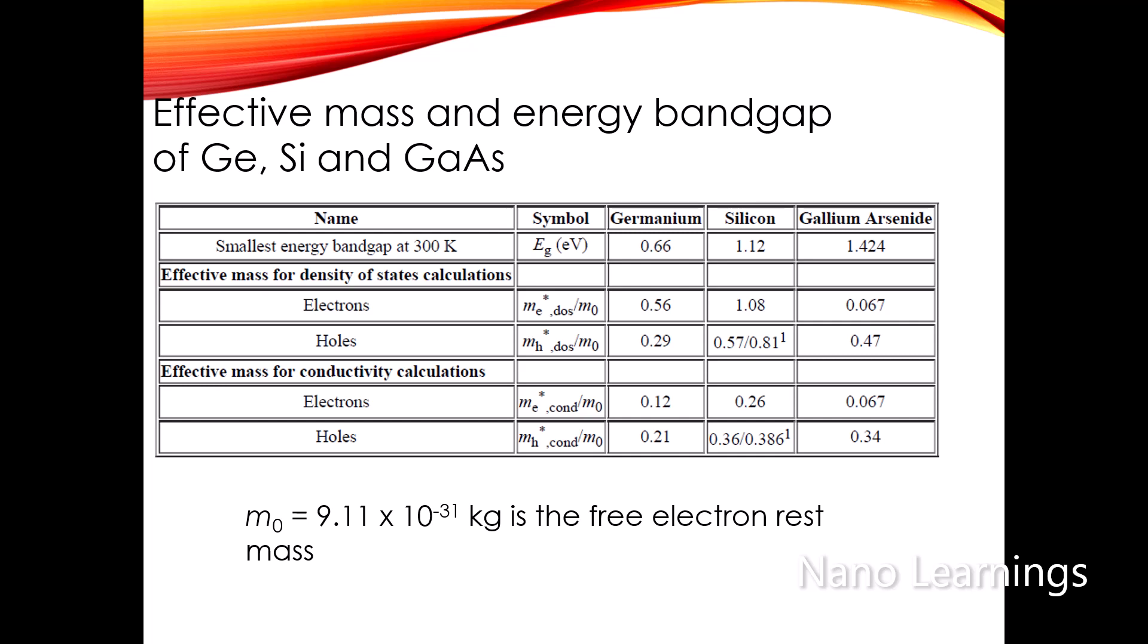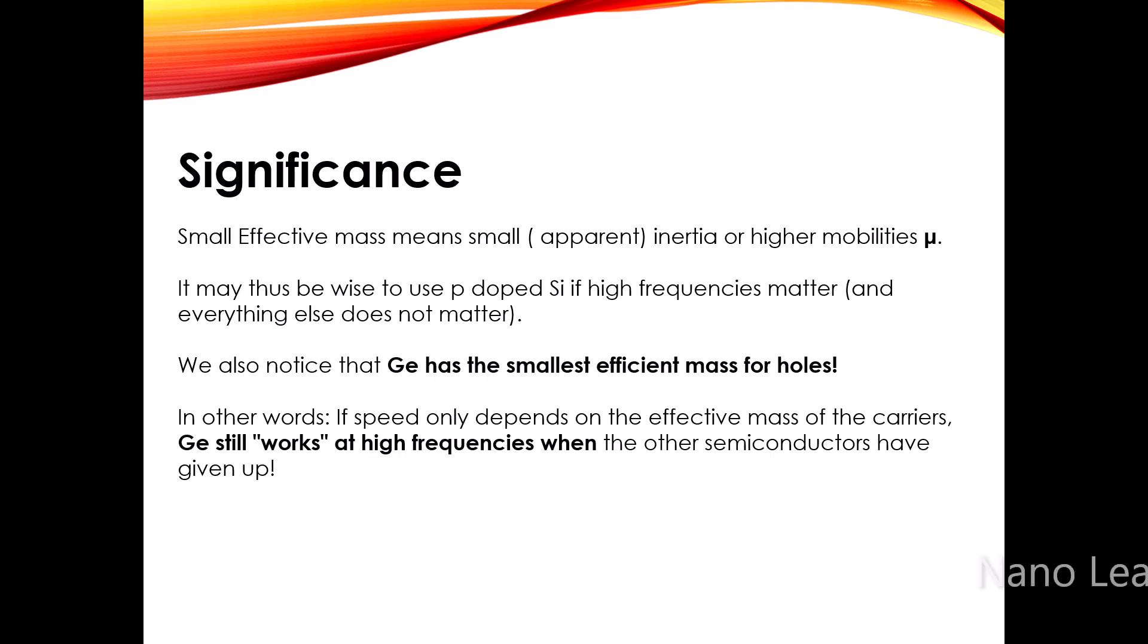If you look at the effective mass for conductivity, silicon has the highest value for electrons and germanium has the highest value for holes. And now its significance: small effective mass means small inertia or higher mobilities. It may thus be wise to use p-doped silicon if high frequencies matter and everything else does not matter.